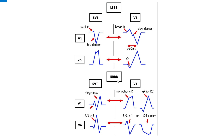If the ECG shows a right bundle branch block (RBBB) morphology, then for the rhythm to be SVT there should be a small R, then S wave, and a terminal R-prime in V1, along with a tall R and small RS in lead V6 with an RS ratio of more than one. For the rhythm to be VT with RBBB morphology, a presence of a monophasic R wave in lead V1, or a small Q and tall R wave in lead V1, along with an RS ratio of less than 1 in V6 suggests ventricular tachycardia.